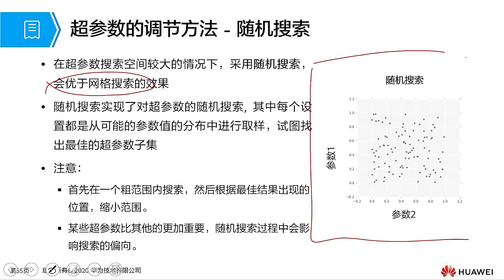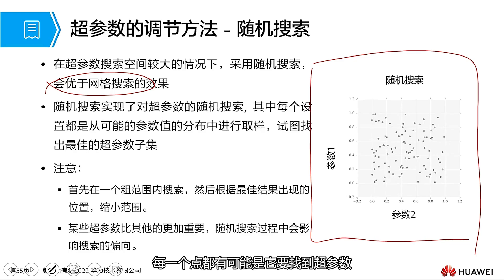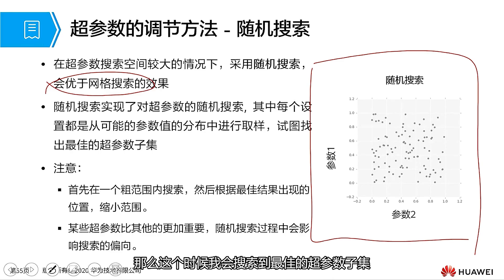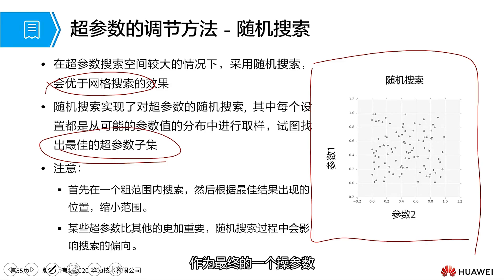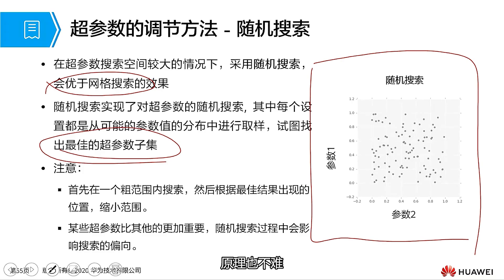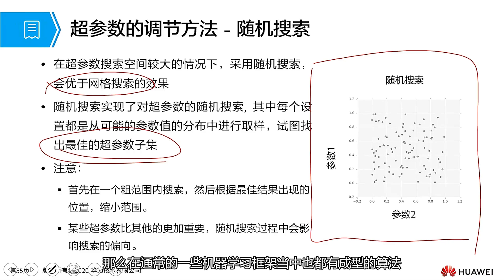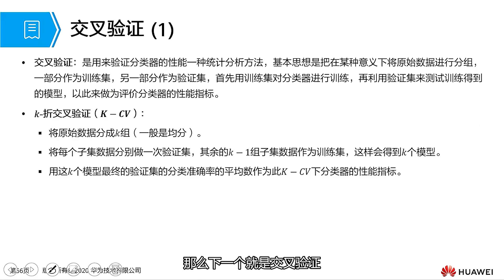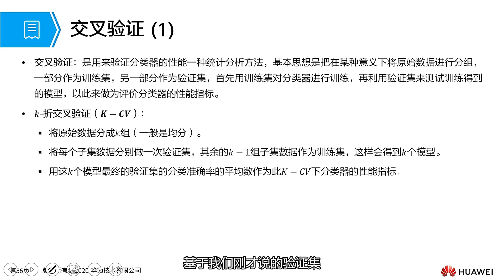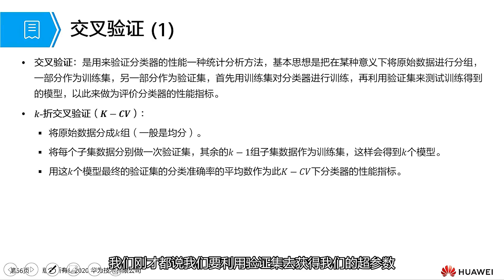Random search is used when the search space is relatively large — it will have a better effect than grid search. For example, if this space is very large and every point inside could be the hyperparameter you are looking for, you randomly select some points and perform a search. You then find the best subset of hyperparameters as the final hyperparameter. These two concepts are simple and the principles are not difficult. In some common machine learning frameworks, there are also mature algorithms available for everyone to use.